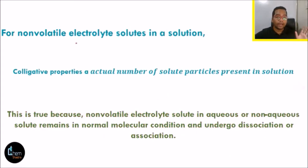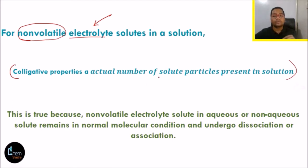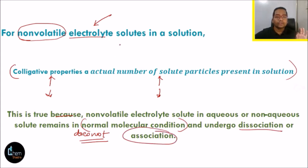If you have a non-electrolyte solute, the formula value will be exactly equal to the experimental value — there may be a 0.1 or 0.2 difference, but they will be very similar. The problem arises when your non-volatile solute is an electrolyte. An electrolyte can undergo dissociation, meaning it can conduct electricity. In that case, the colligative property is directly proportional to the actual number of solute particles present in solution.